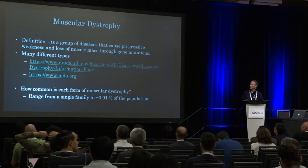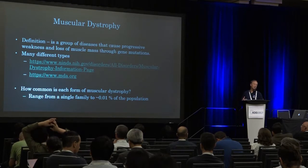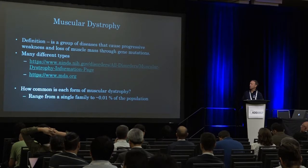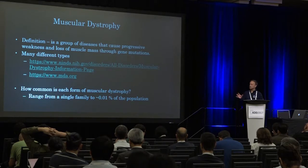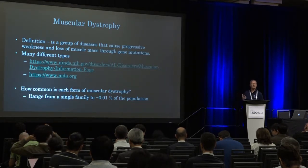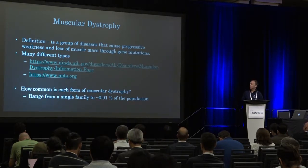Something people frequently ask is how common is muscular dystrophy in general. Overall, muscular dystrophy can affect maybe upwards of 0.05% of the population. But if you're talking about a specific form of muscular dystrophy, there are examples where it's just a single family in a country, or up to 0.1% of the population.